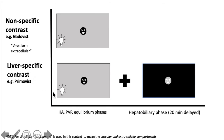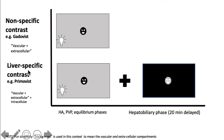There are also other types of liver-specific contrast, but today we're just going to focus on Primovist. For non-specific contrast, the contrast can only travel the vascular and the extracellular spaces, while liver-specific contrast can travel the vascular, the extracellular, and the intracellular compartment.